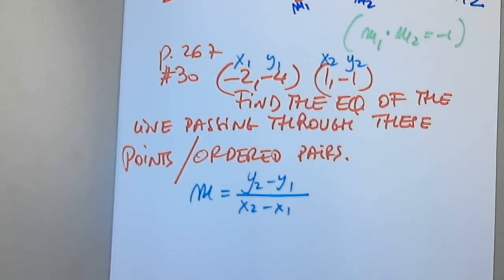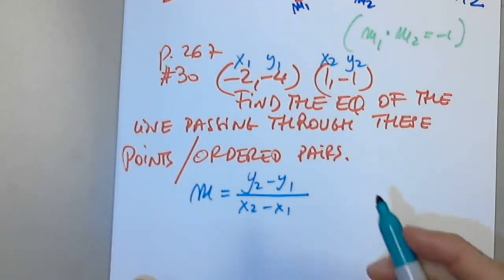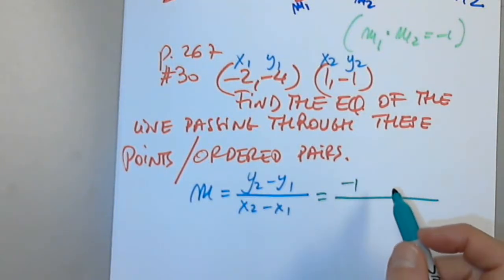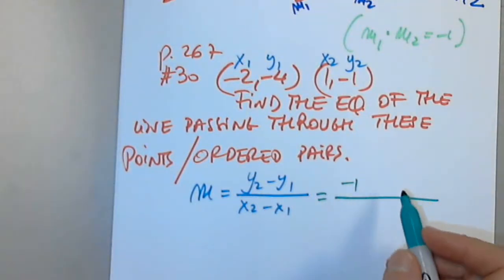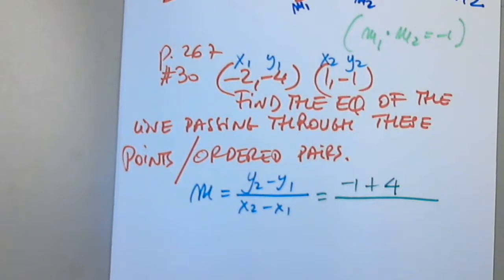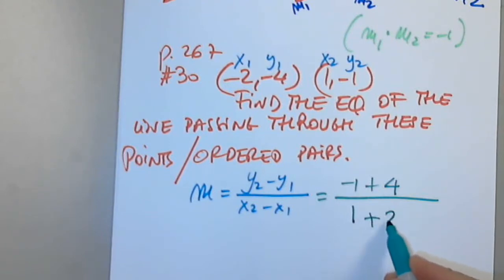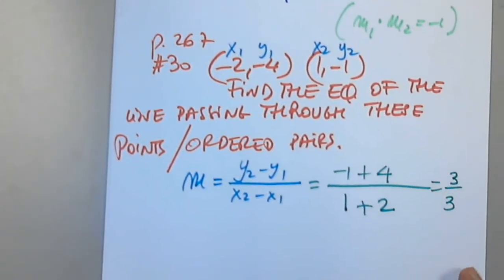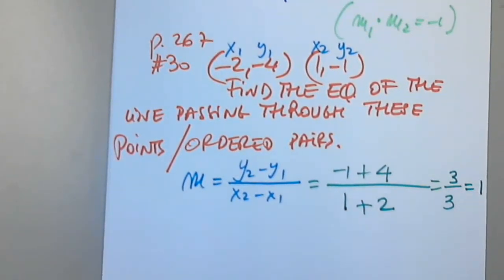Can anyone dictate? Negative 1 minus negative 4, over 1 minus negative 2. So the numerator is 3 and the denominator is 3, so the slope is 1. First I determine the slope.